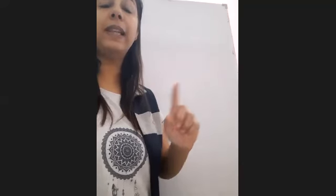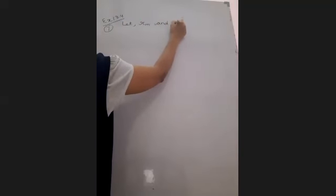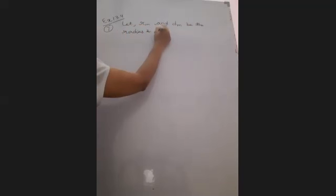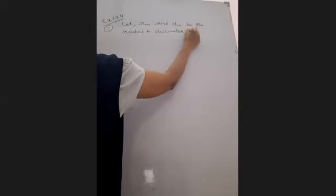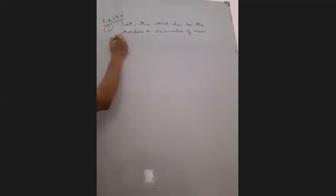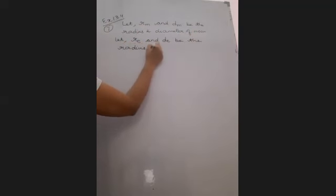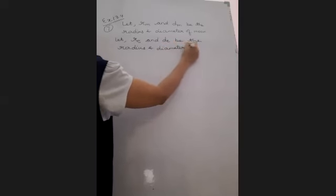We are given the relationship between the diameters of moon and earth. According to the question, first of all let us assign the variable. Let rm and dm be the radius and diameter of moon. And let re and de be the radius and diameter of earth.